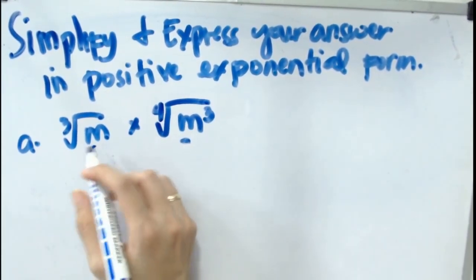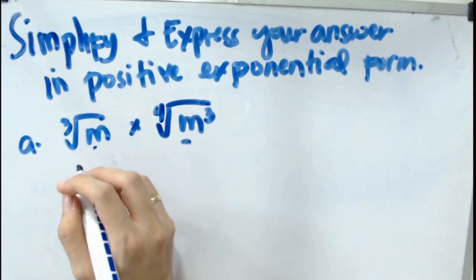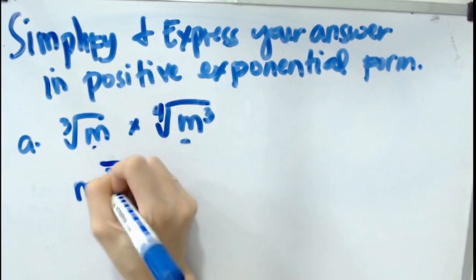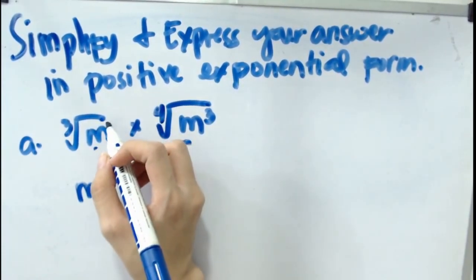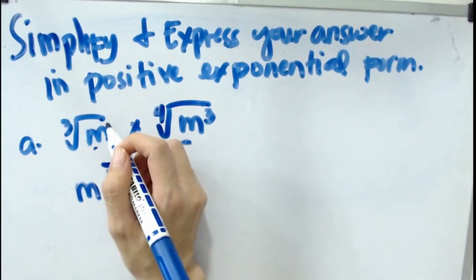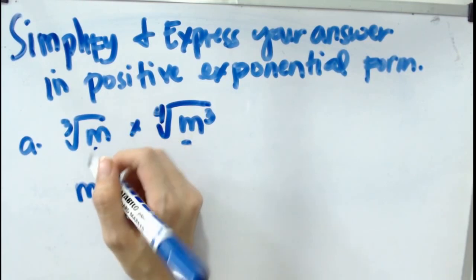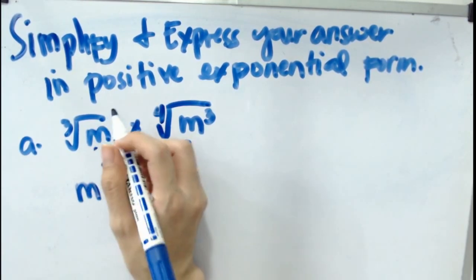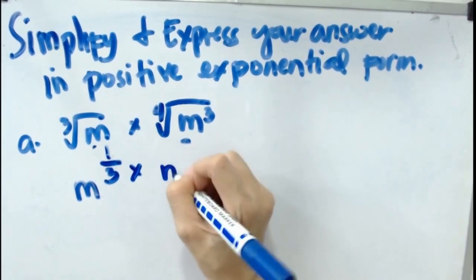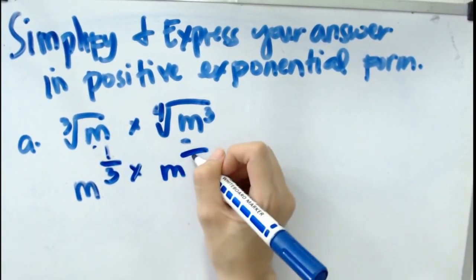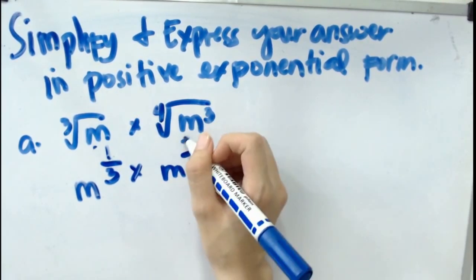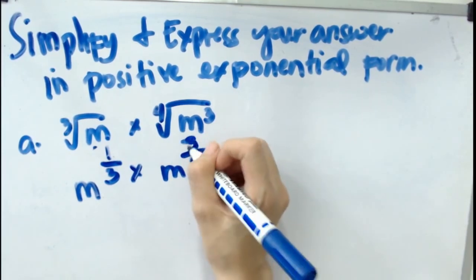According to the earlier video, to convert a radical into a rational exponent, the nth root will be the denominator, and the exponent of m will be the numerator. In this case, you cannot see any exponent, but whenever we deal with a number or letter without an exponent, the exponent is always 1. So the nth root becomes the denominator. And since we have m cubed in the second term, 3 becomes the numerator.